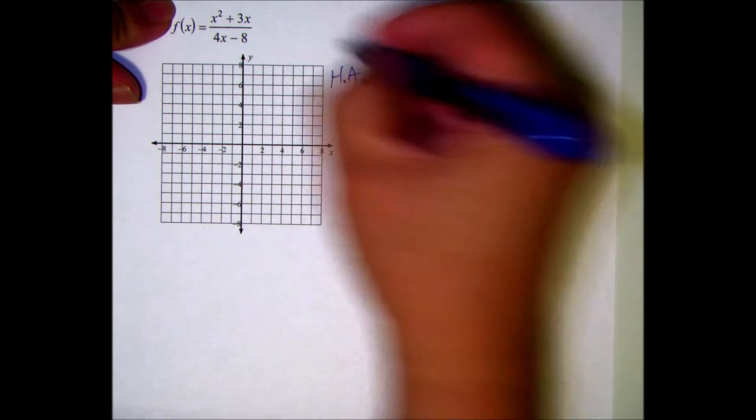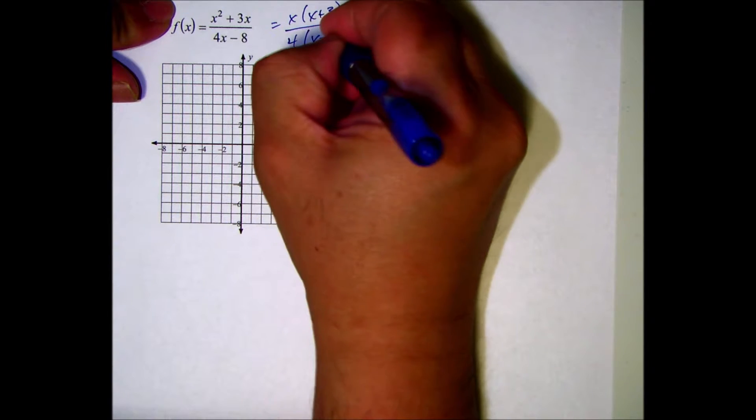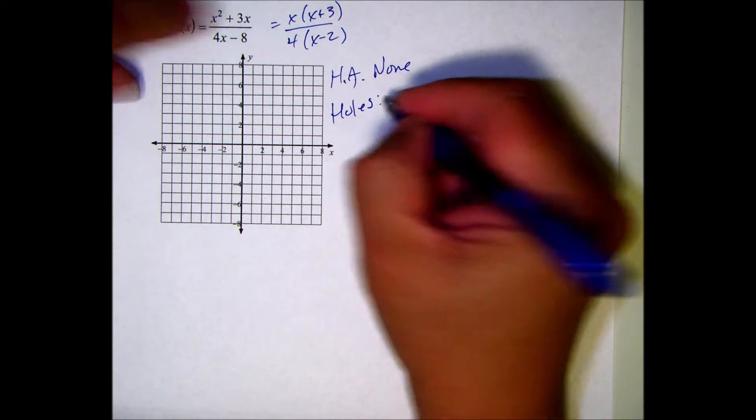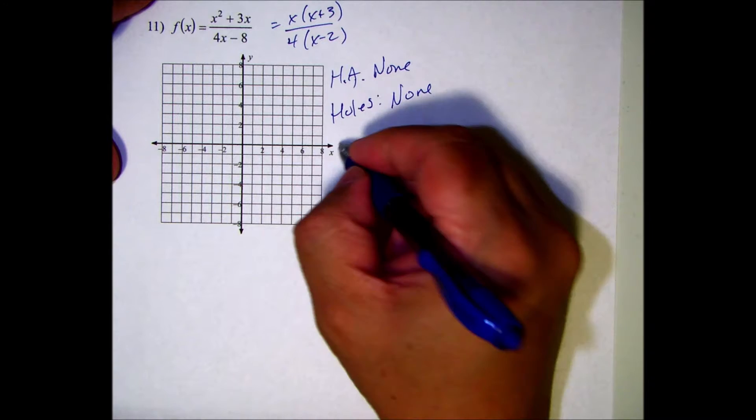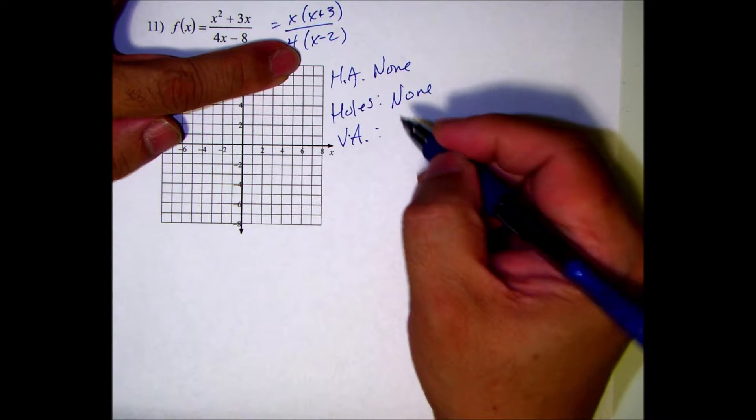Look for holes. So x times x plus 3, 4 times x minus 2. There are no holes. Holes are when you can reduce something; can't reduce it. Look for the vertical asymptotes. Vertical asymptote makes the denominator zero.